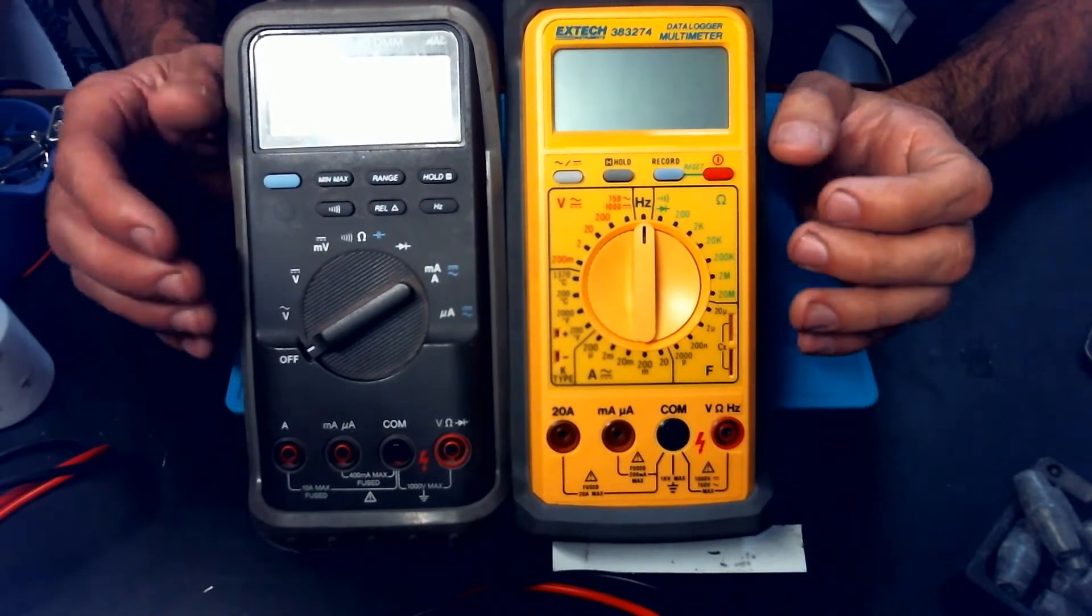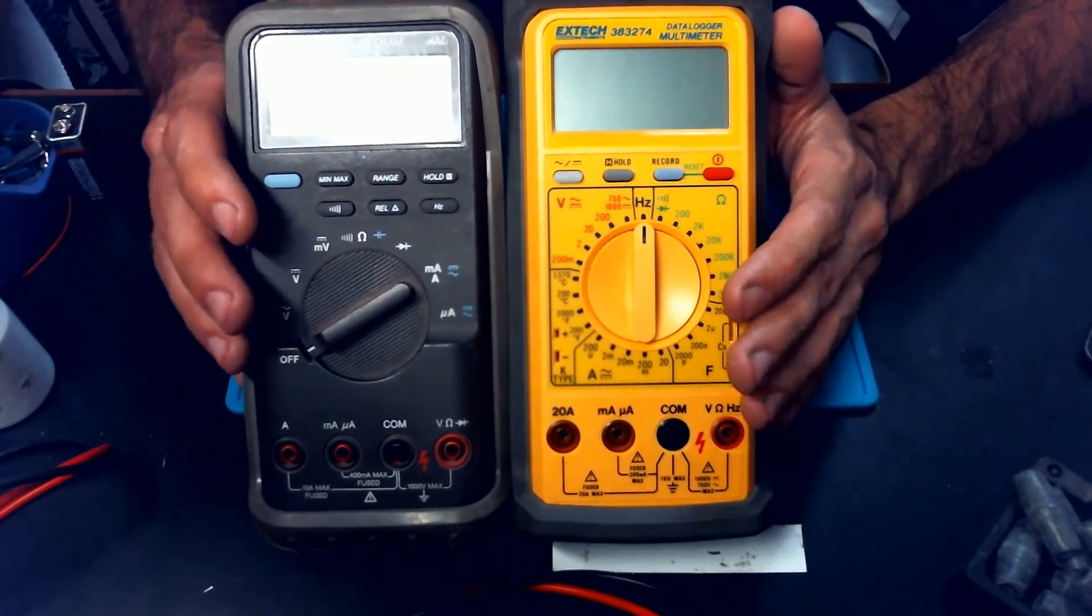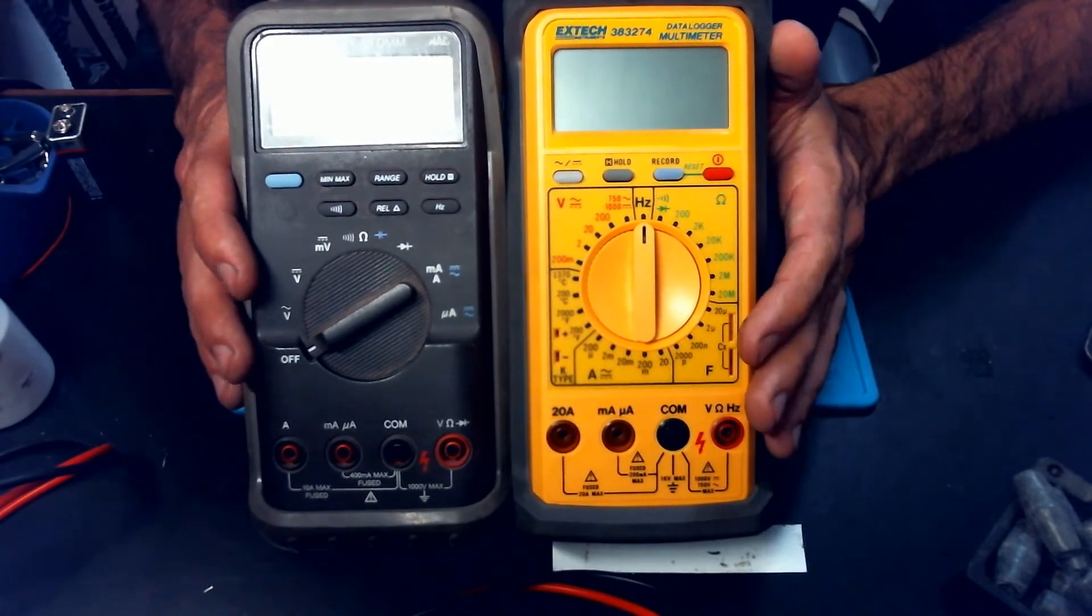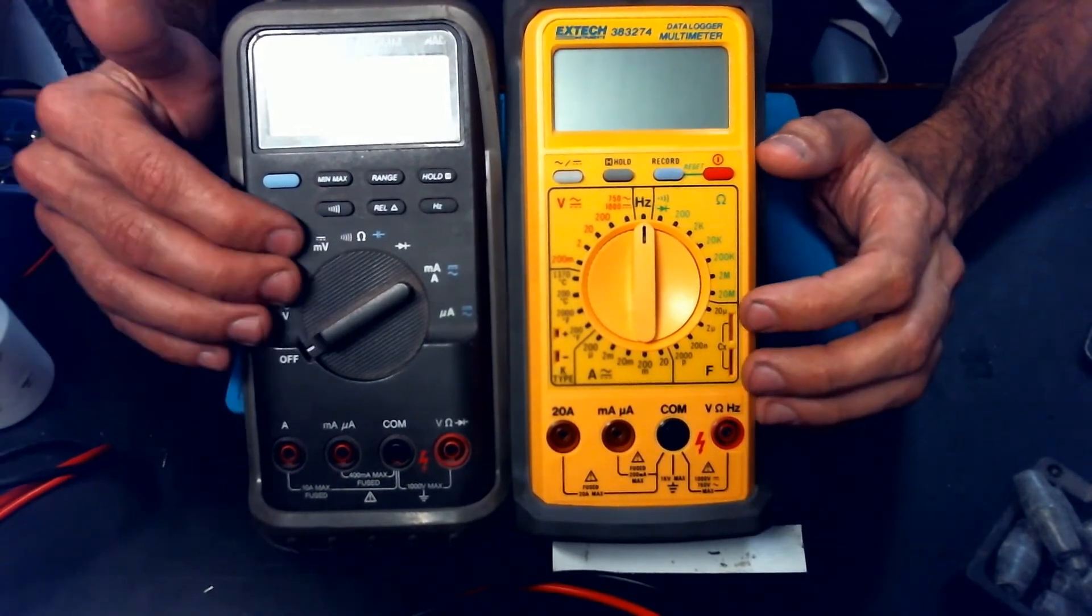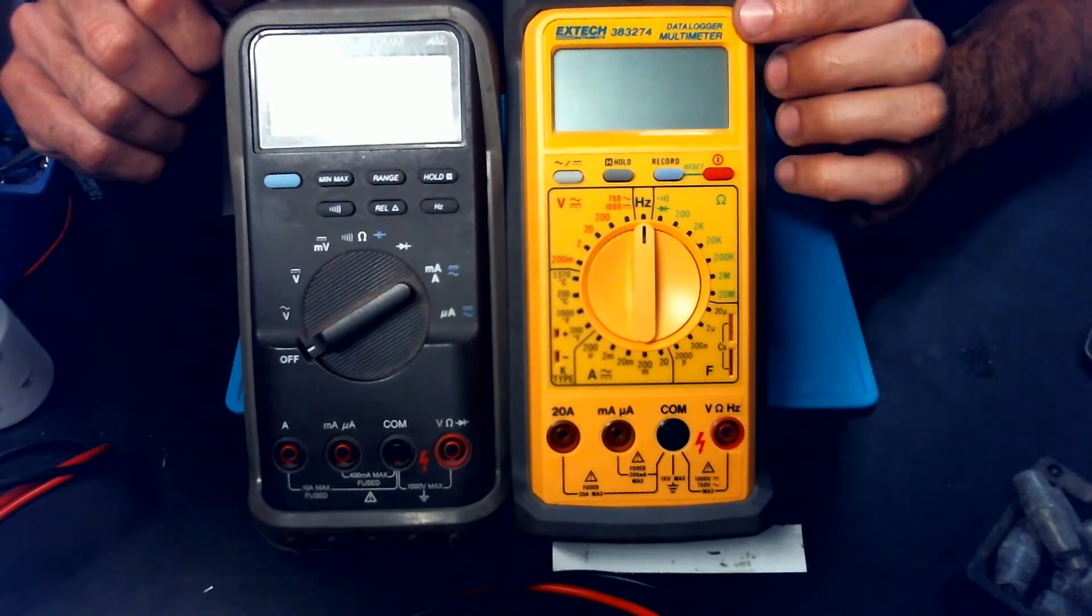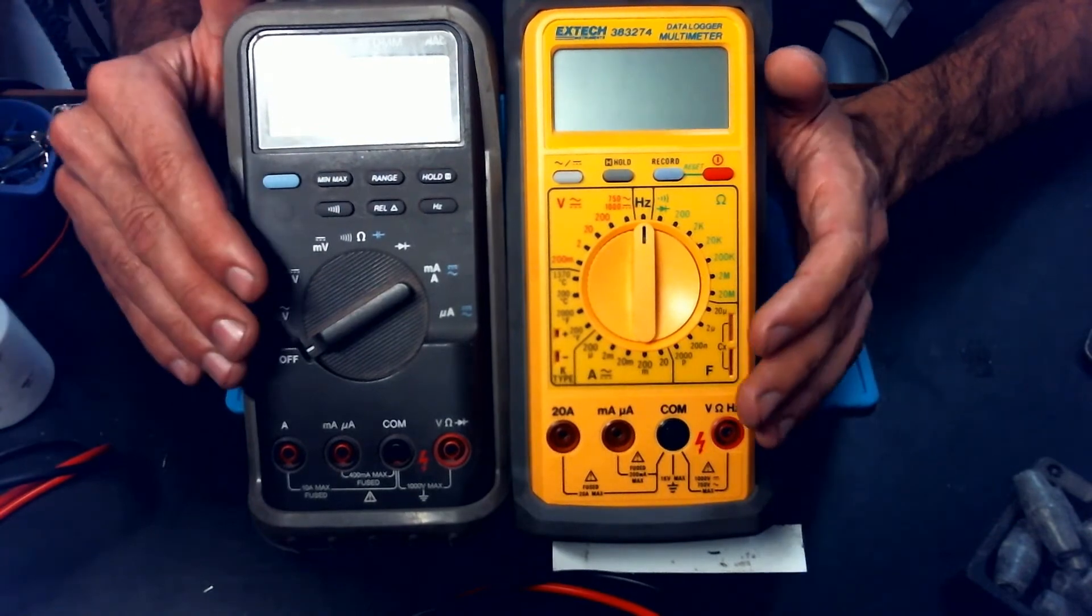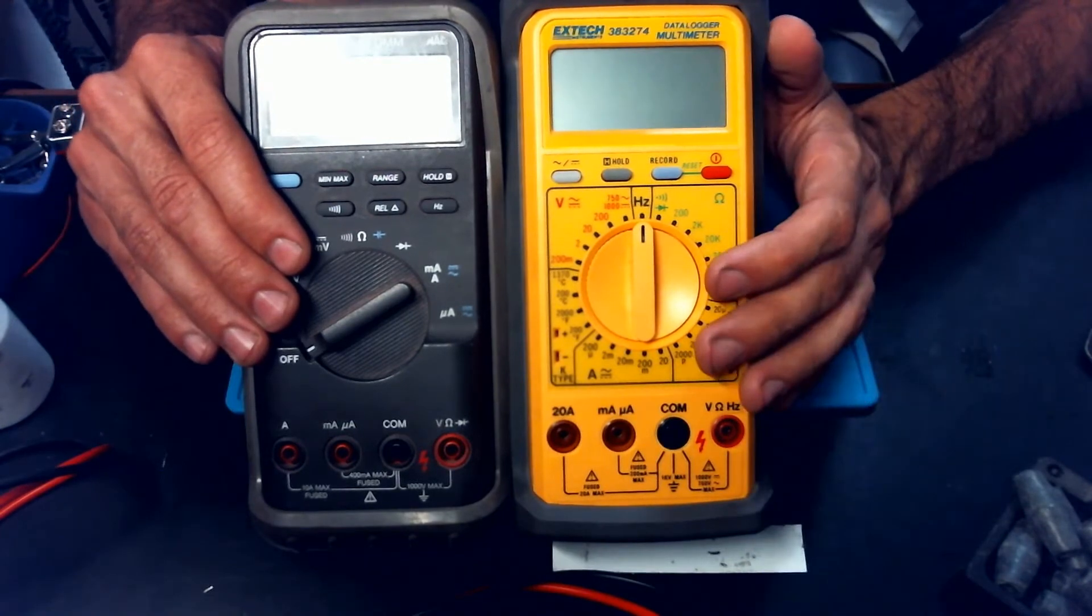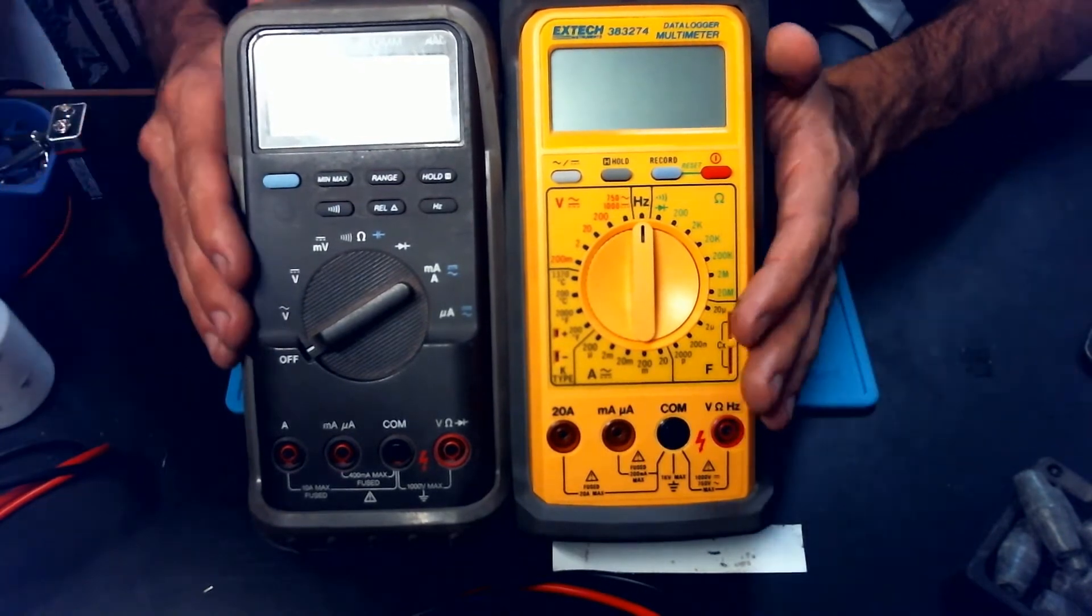Now, I want everybody to keep in mind that this is not going to be a brand comparison. This is not going to be Fluke versus X-Tech. These meters are comparable to each other in accuracy. The main thing we're going to focus on is that the Fluke is an auto-ranging meter, and the X-Tech is a manual-ranging meter. None of that is going to be important in this video. We're strictly going to talk about ease-of-use, features that one may have that the other may not have, because of the auto-ranging versus the manual-ranging.